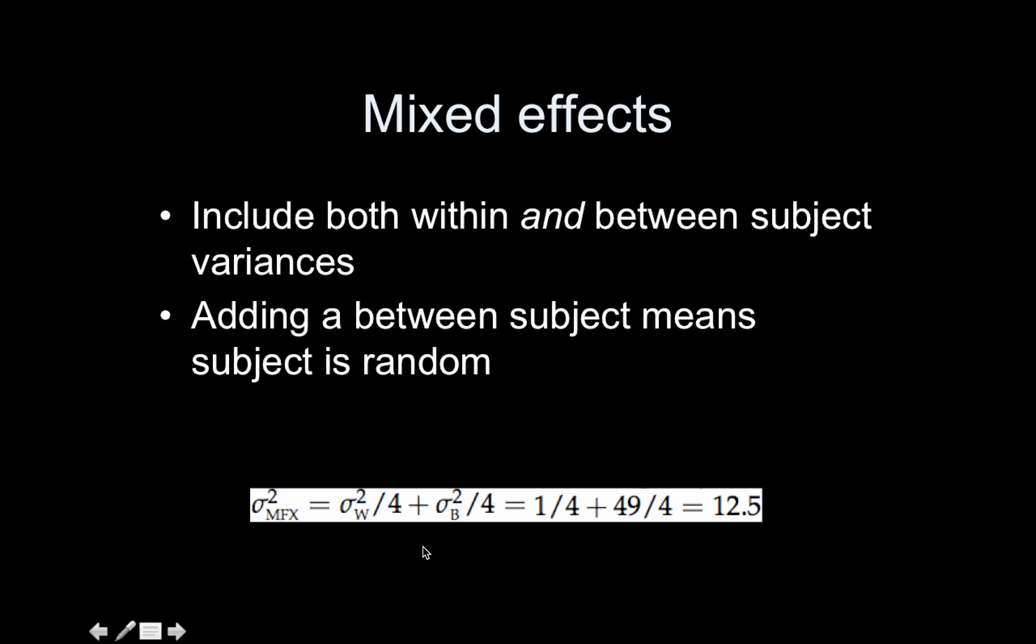So that requires knowing a between subject variance. The sigma squared b corresponds to the variability due to the fact that we all have different haircuts. And again, the oracle has kindly come back and said, oh, by the way, that's 49. Fine. So now the mixed effects variance, same idea, you just divide each of those by four and sum them. So 1 fourth plus 49 fourths is 12.5.